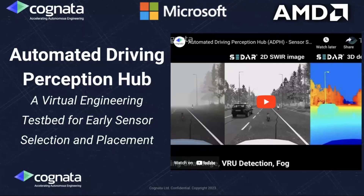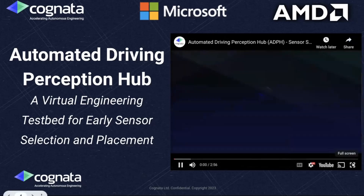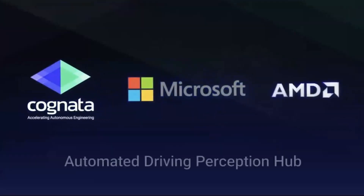Another project we are highly promoting is a collaboration between Cognata, Microsoft, and AMD called the Automated Driving Perception Hub, where we bring virtual sensors to the cloud that are certified by the sensor provider. This project runs on Microsoft Azure servers using AMD GPUs. Having certified sensors on the cloud means you can trust the virtual sensors to be certified by the actual maker and utilize them with confidence.